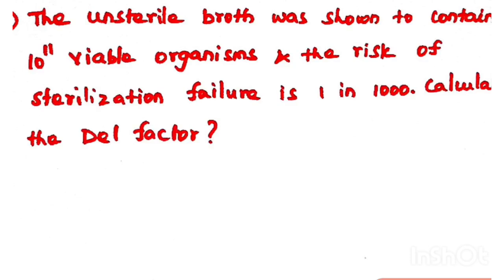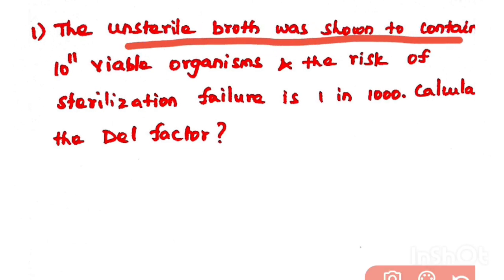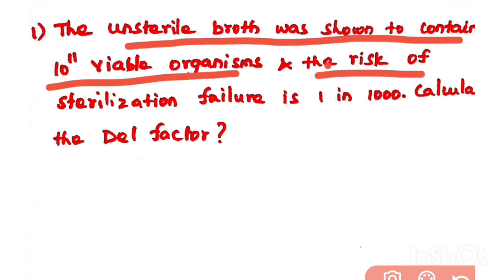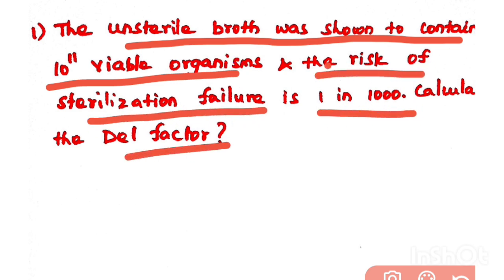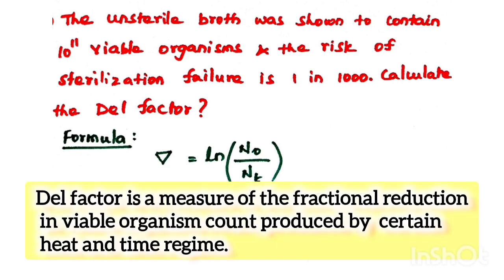Hello everyone, welcome to Biotech Notebook. In this video we are going to see how to calculate the del factor. The first problem: an unsterile broth was shown to contain 10^11 viable organisms, and the risk of sterilization failure is one in a thousand. Calculate the del factor.